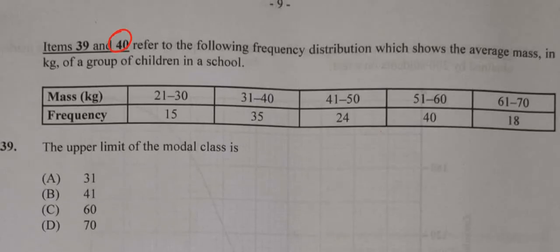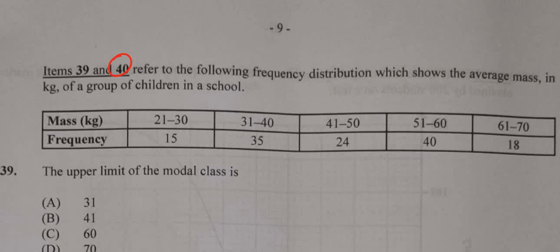So we look at the mass in kilograms. We have 21 to 30 kilograms, 31 to 40 kilograms. We're looking for greater than 40 kilograms, so these are the masses that are greater than 40 kilograms.